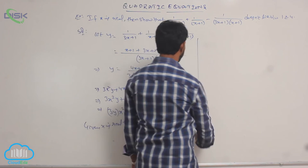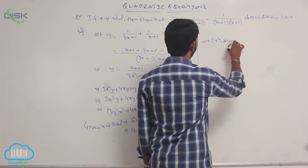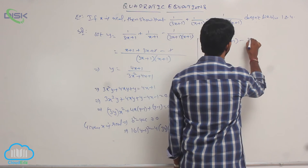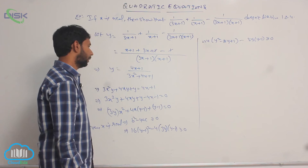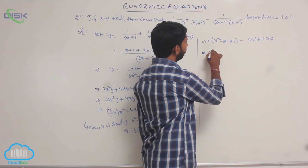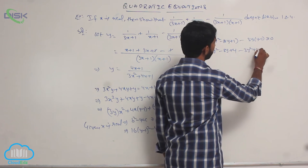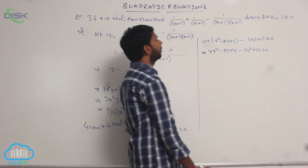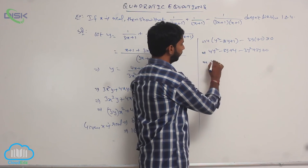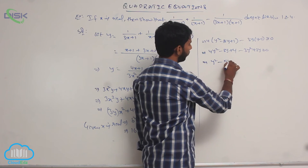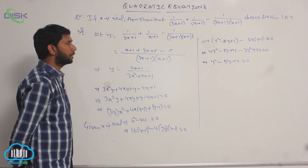A factor of 4 is common, giving 4[(y² - 2y + 1) - 3y(y-1)] ≥ 0. Simplifying: 4y² - 8y + 4 - 3y² + 3y ≥ 0. That is, 4y² - 3y² gives y², and -8y + 3y gives -5y, so y² - 5y + 4 ≥ 0.